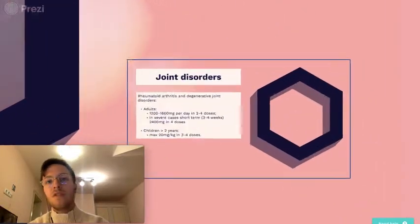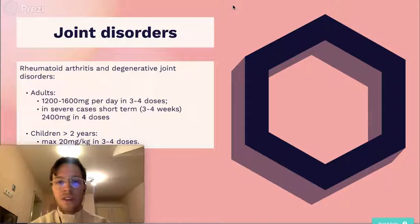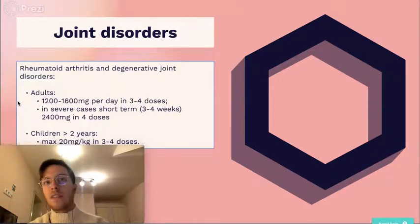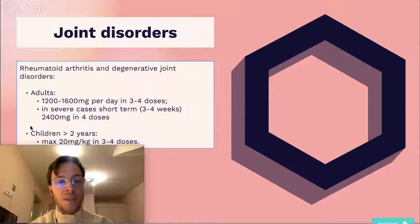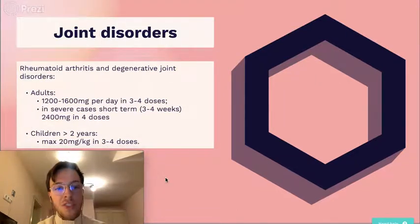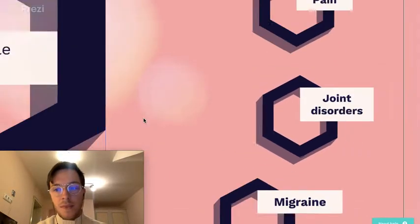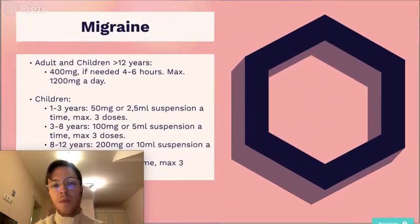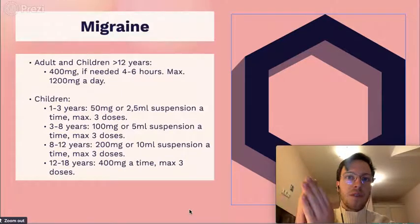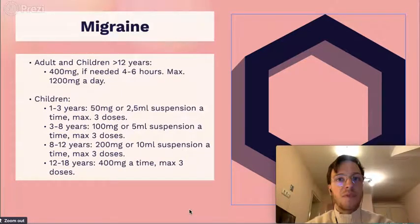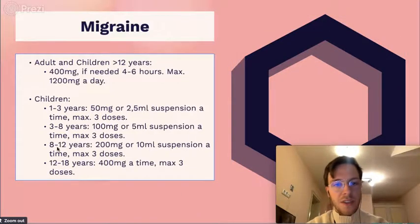When using it for joint disorders like rheumatoid arthritis or arthrosis, higher dosages are allowed. Adults can use 1200 to 1600 milligrams a day divided over 3 to 4 doses, and in severe cases short-term use can go even higher to 2400 mg divided over 4 doses. Children older than 2 years can use 20 milligrams per kilogram in 3 to 4 doses. When using ibuprofen for migraine in adults and children older than 12 years, use 400 mg if needed every 4 to 6 hours to a maximum of 1200 milligrams; for children you can use the on-screen table.